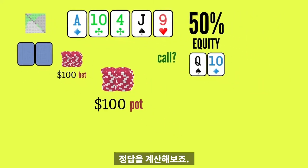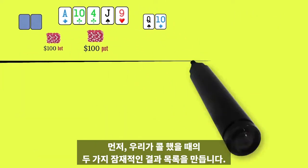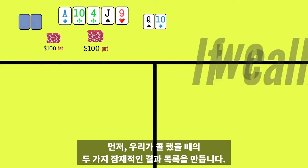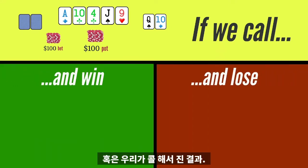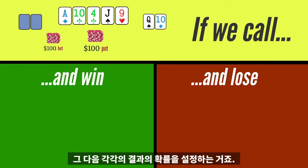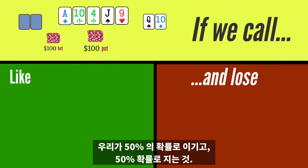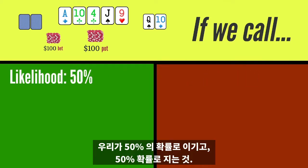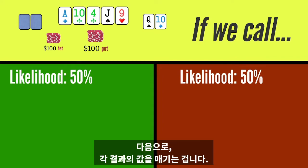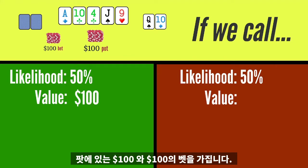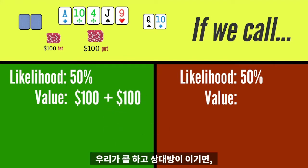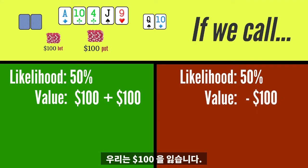Let's calculate the answer. First, we list the two potential outcomes if we call: we call and win, or we call and lose. Then we establish the probability of each outcome — we win 50% of the time, and we lose 50% of the time. Next, we establish the value of each outcome. If we call and win, we get the $100 in the pot plus the $100 bet. If we call and our opponent wins, we have lost that $100.